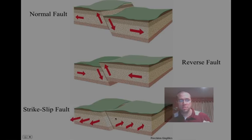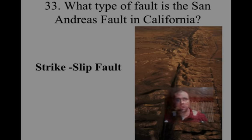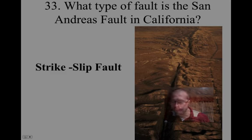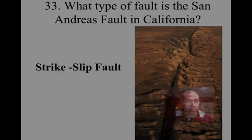The strike-slip fault goes with those transform boundaries where the plates are moving past each other horizontally or laterally. Revisiting the San Andreas Fault here — you have a nice picture of it — and that is kind of what's happening to the landscape as these two different plates are sliding past each other. This is a strike-slip fault.